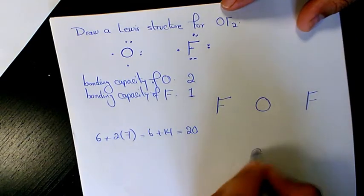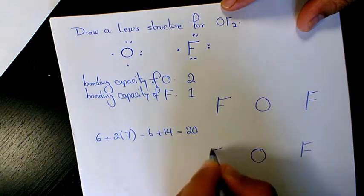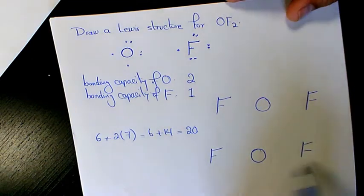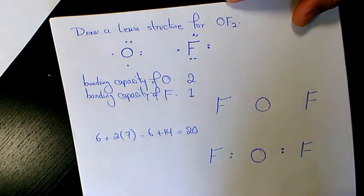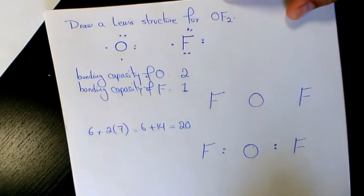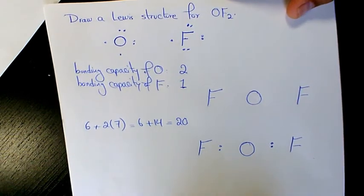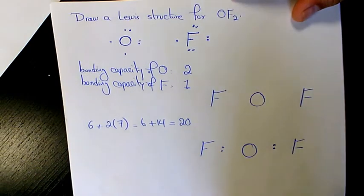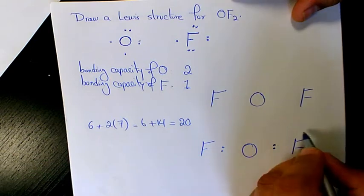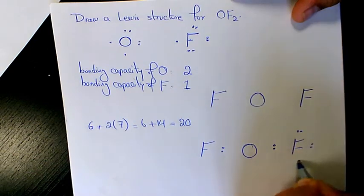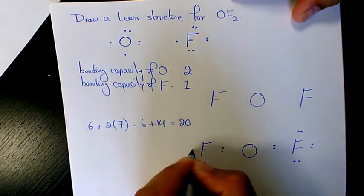Then I need to place bonding electrons between two adjacent pairs of atoms. And then I need to place pairs of the remaining valence electrons as lone pairs on the surrounding atoms, so only on the surrounding atoms, not the central atom.